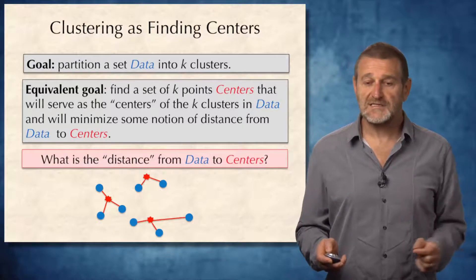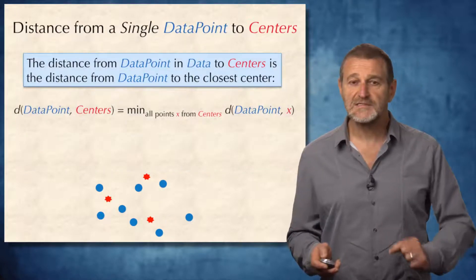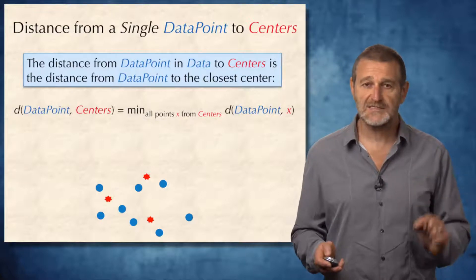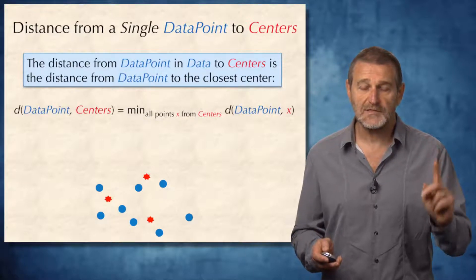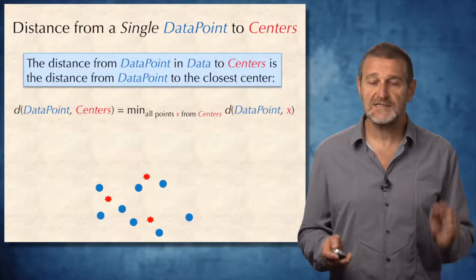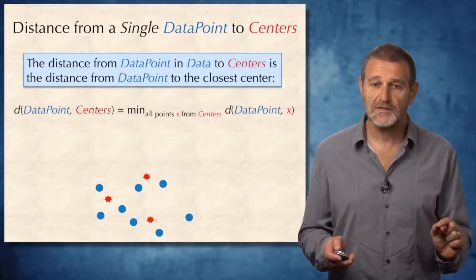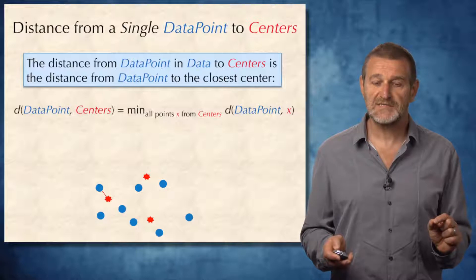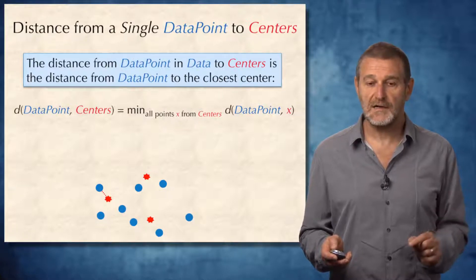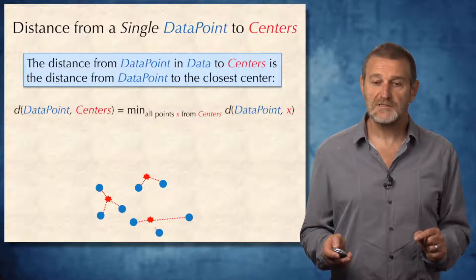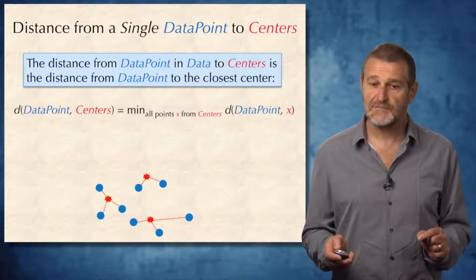What is the distance from data to centers? To define this notion, we first define the distance from a single data point to centers. It is natural to define this as the distance from a data point to its closest center. For example, the distance from a given blue point is the distance to its closest center, and we can construct these distances for all data points in this way.